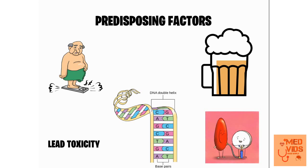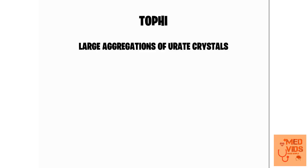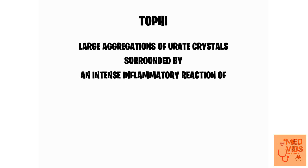The pathognomonic finding in the joints of gout patients is known as tophi. Tophi are large aggregations of urate crystals. Because of the accumulation of these crystals there is excess inflammation, and they are surrounded by an intense inflammatory reaction of foreign body giant cells, which try to engulf the urate crystals. This is what is called tophi.